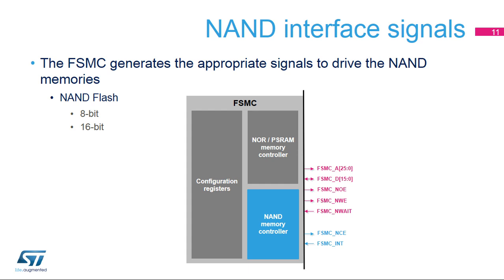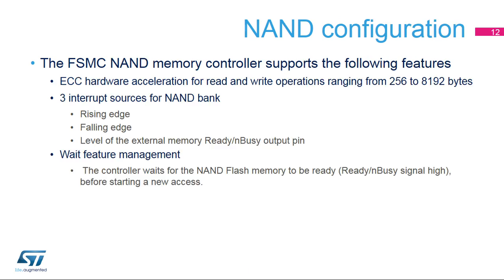The command latch enable (CLE) and address latch enable (ALE) signals of the NAND Flash memory device are driven by address signals from the FSMC controller connected to address line 16 and address line 17, respectively. The ALE is active when writing to the address section, and the CLE is active when writing to the command section. The FSMC NAND memory controller supports error code correction: the ECC algorithm can perform 1-bit error correction and 2-bit error detection per 256 to 8,192 bytes read from or written to NAND Flash memory, based on the Hamming coding algorithm. Three interrupt sources can be enabled to detect a rising edge, falling edge, or level on the ready/busy signal output from NAND Flash memory.